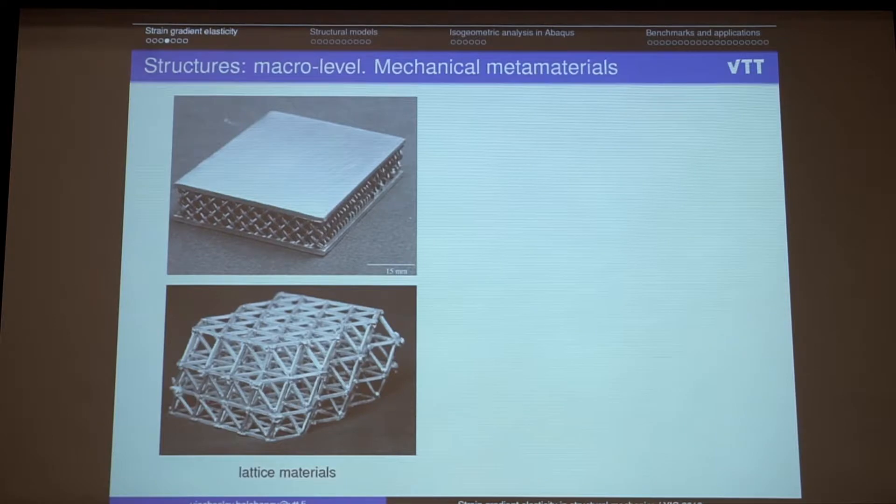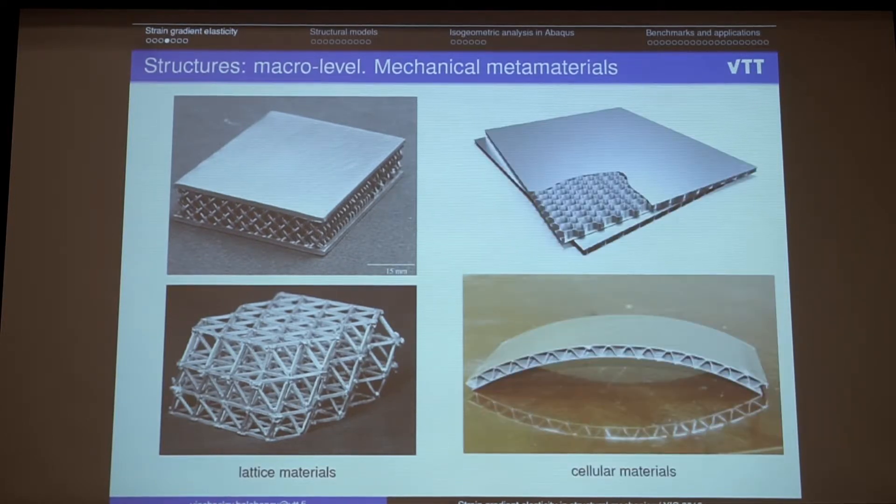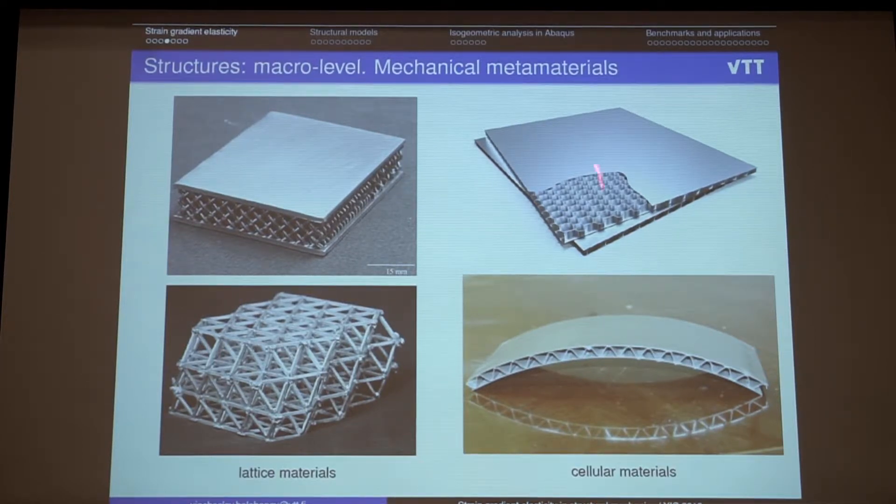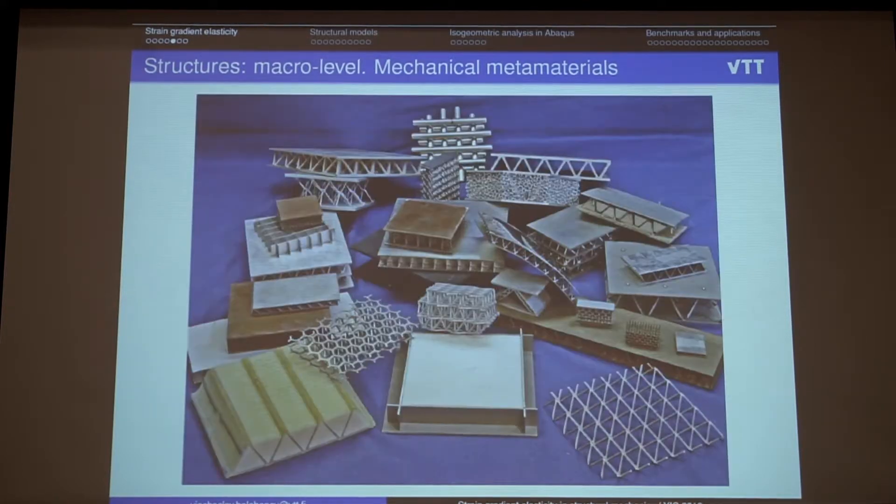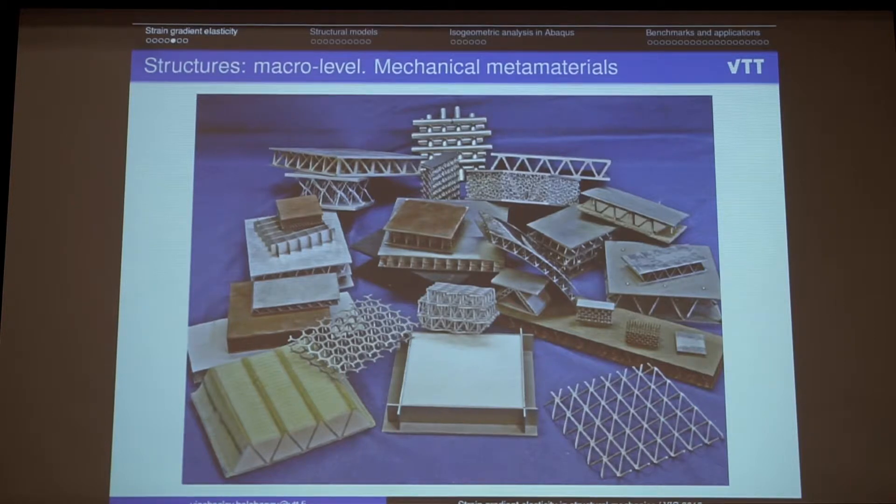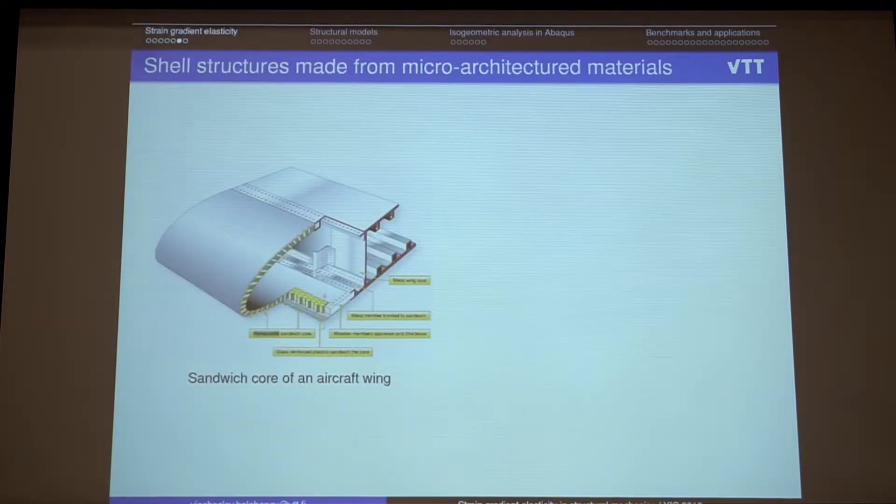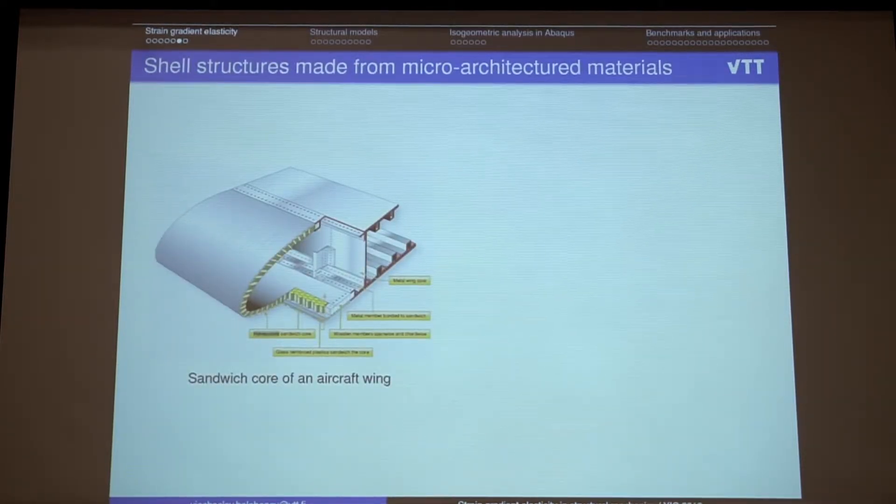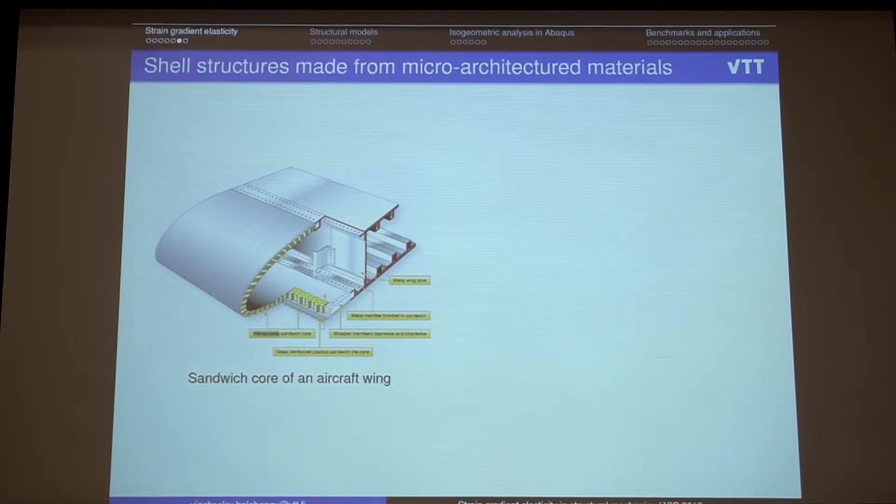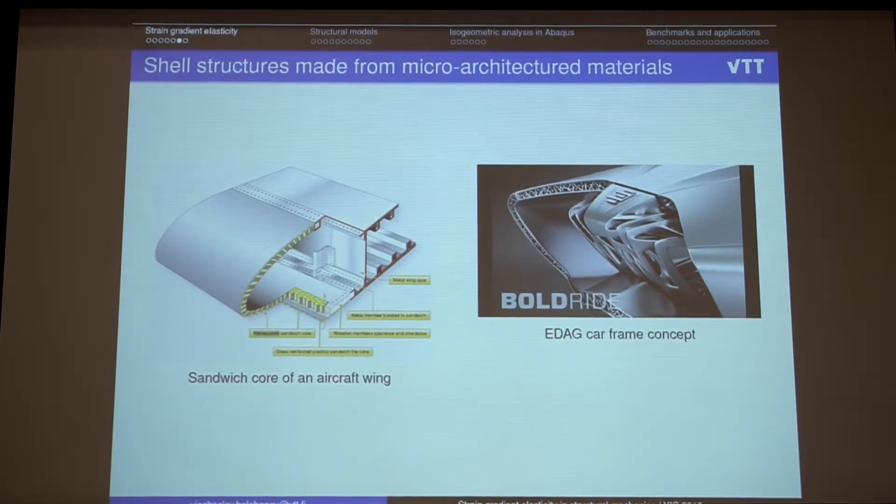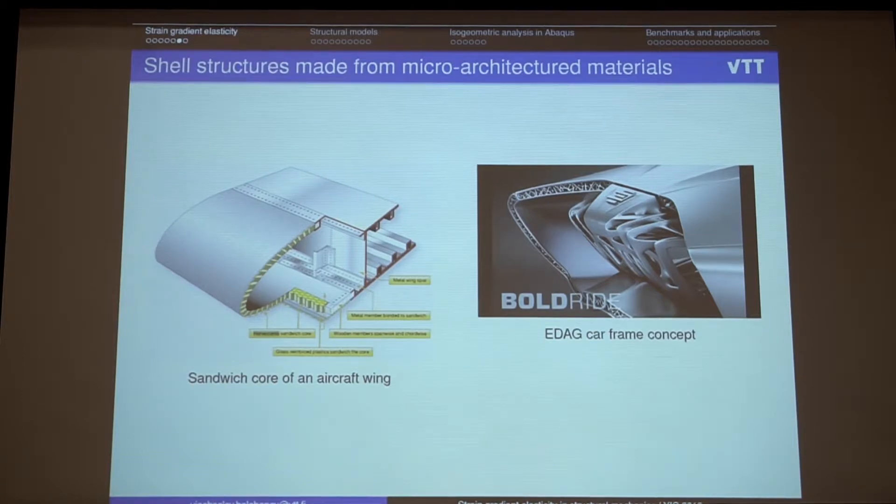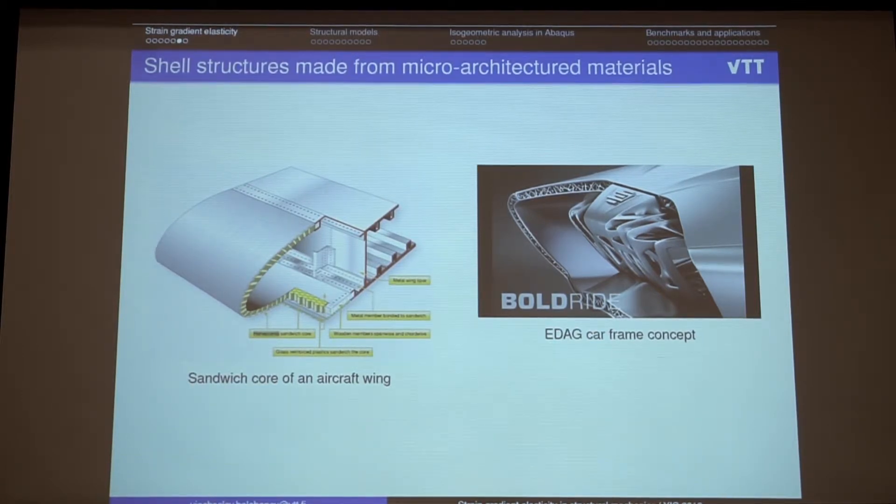Maybe more interesting applications are related to artificial architectured materials, different lattice or cellular materials. There are actually a lot of them, a lot of different configurations can be built, can be used. And they, of course, have a lot of applications in modern engineering science and also in some projects of future. So definitely we will use more and more smart materials, metamaterials to do more efficient materials.